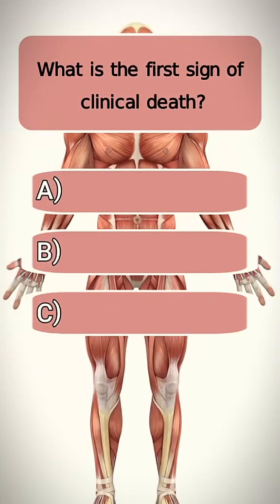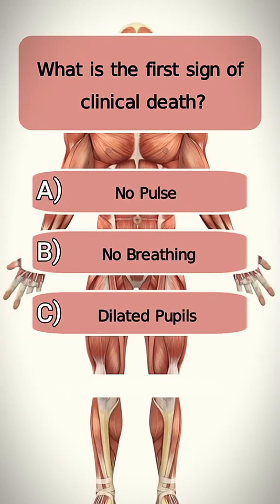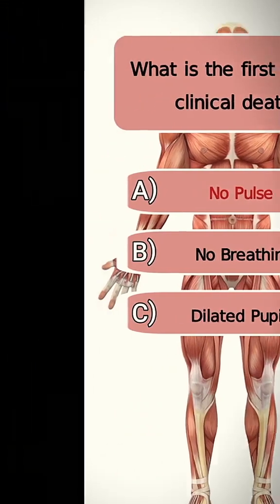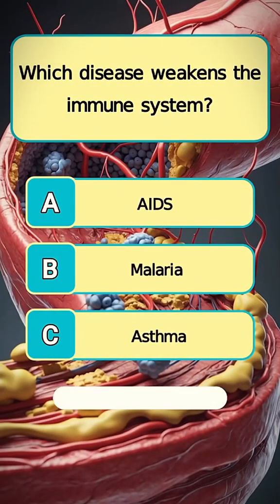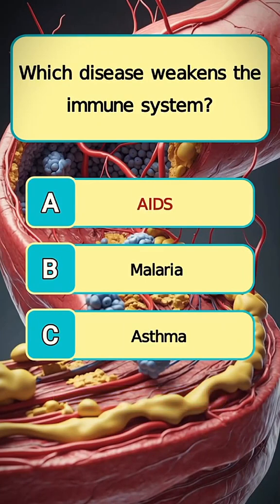What is the first sign of clinical death? Answer A. No pulse. Which disease weakens the immune system? Answer A. AIDS.